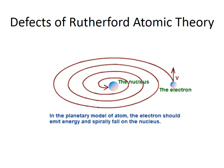Defects of Rutherford atomic theory. In 1911, Rutherford put forward a theory. According to him, the nucleus is present in the center of an atom, while electrons are continuously revolving around the nucleus.